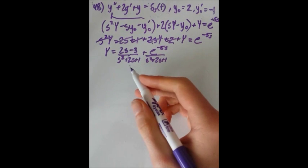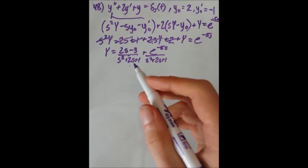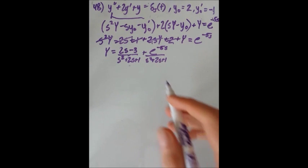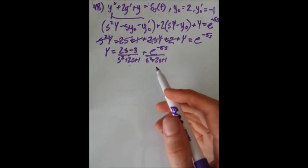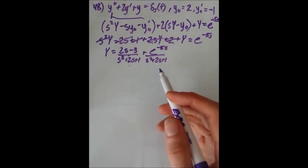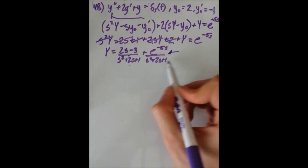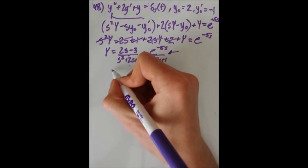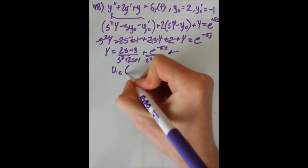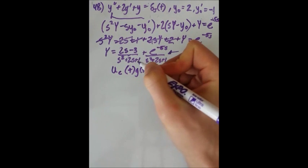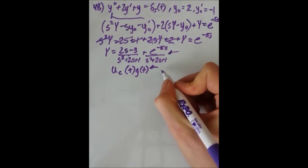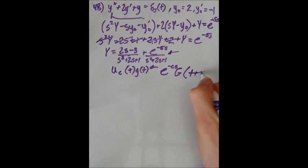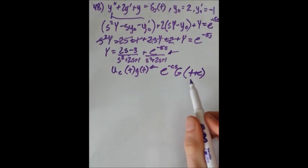That is our transform equation. We can rewrite some of these using partial fractions or completing the square. We don't need completing the square for the e to the minus 5s piece — there's a straightforward expression. We see that the Heaviside step function with value C, times some function of t, has a Laplace transform of e to the minus Cs times uppercase G of s. This is available on any table.